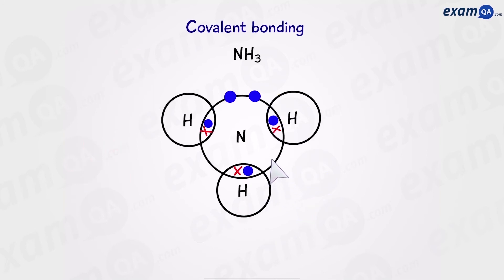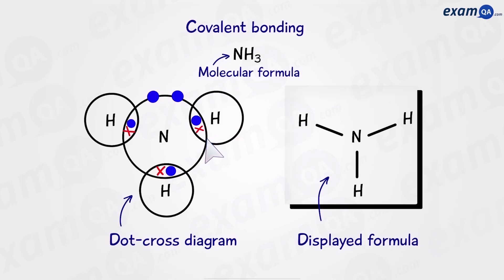And it's going to look like this. So if we count, the hydrogen on the left has one, two. The hydrogen at the bottom has one, two. And the hydrogen on the right has one, two. So they all have two electrons. And therefore, they have a full outer shell. As for nitrogen, it's going to have one, two, three, four, five, six, seven, and eight. Perfect. And here we have the molecular formula, the dot and cross diagram, and the displayed formula on the right.